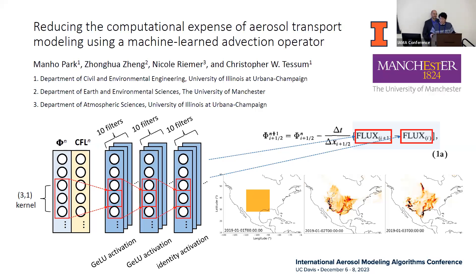Mano Park presents a poster on developing an advection solver using a convolutional neural network to emulate a numerical solver. The CNN-based solver accepts scalar concentration and CFL number as input and predicts flux at the edge of the numerical grid, yielding a faster solver than traditional CPU-based solvers. Details on the speedup can be found at the poster.